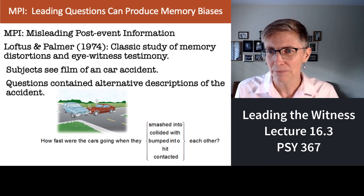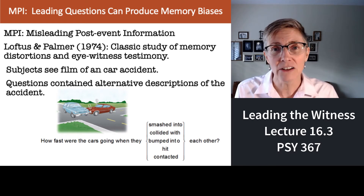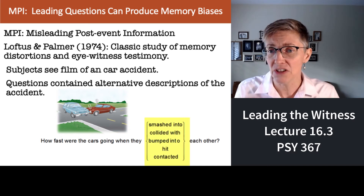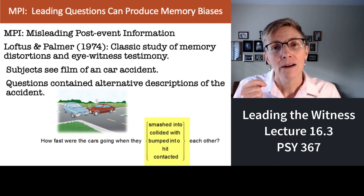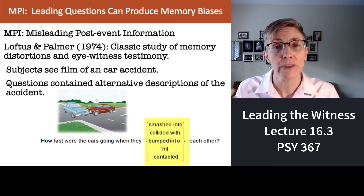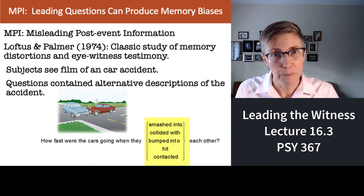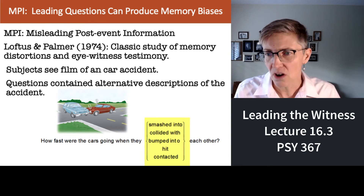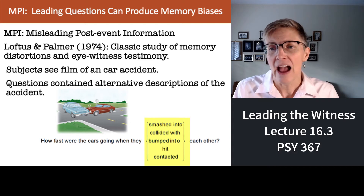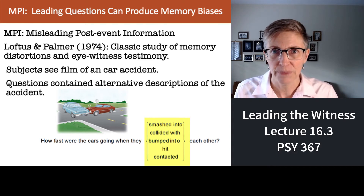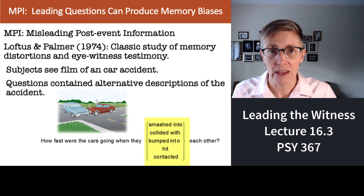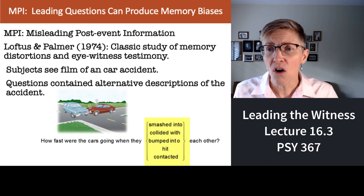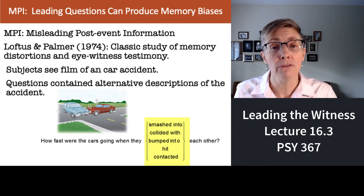So you see a car accident, and later some of the subjects are asked, 'How fast were the cars going when they smashed into each other?' Other people are asked, 'How fast were the cars going when they collided with each other, bumped into each other?' Another group: 'How fast were the cars going when they hit each other?' Or: 'How fast were the cars going when they contacted each other?' If English is your second or third language, it might seem like all of those words mean the same thing, but they don't — they all imply different degrees of force.